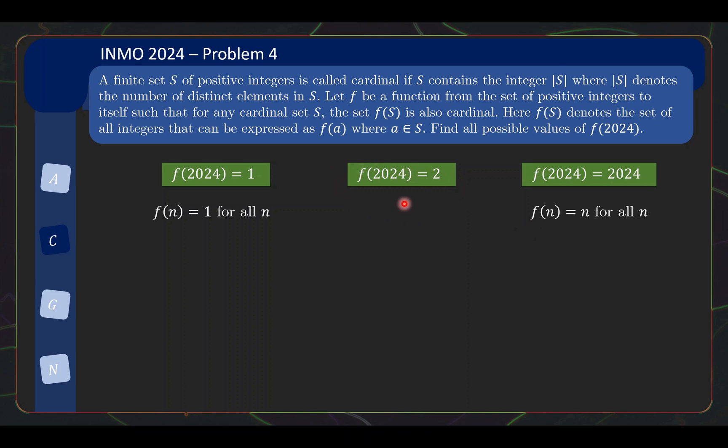And now we need to think of a valid function that will give us f(2024) equals to 2. And this is the final fun puzzle that I would like to give you a chance to pause the video to figure out for yourself if you would like to do so.